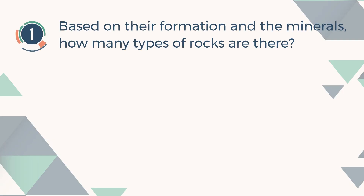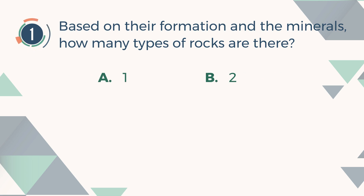Number 1. Based on their formation and the minerals, how many types of rocks are there? A. 1. B. 2. C. 3. D. 4.